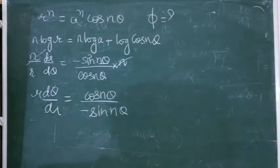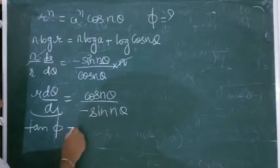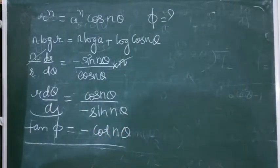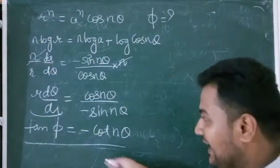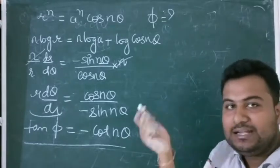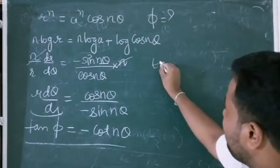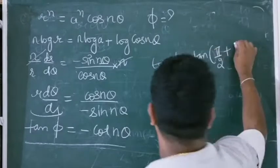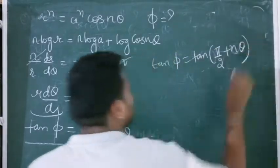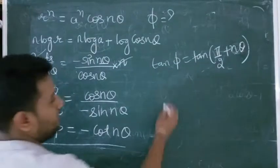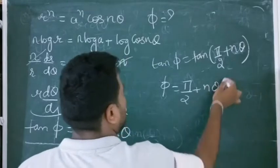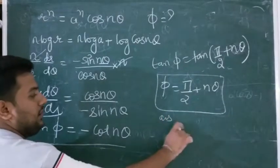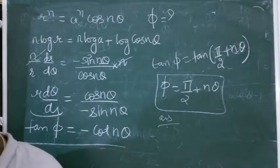So tan φ = -cot(nθ). Using the identity, -cot(a) = tan(π/2 + a), so tan φ = tan(π/2 + nθ). Comparing: φ = π/2 + nθ. That is the answer.